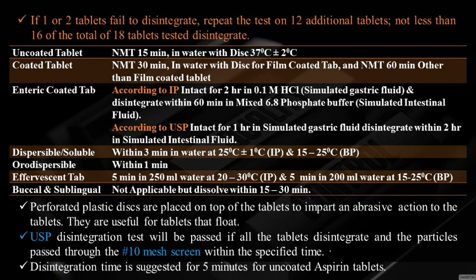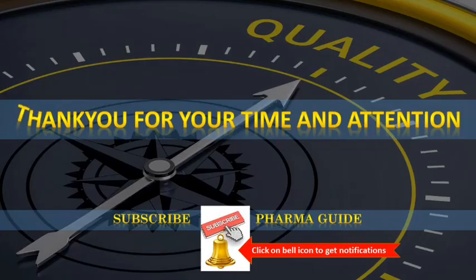Some important points: perforated plastic discs are placed on top of the tablets to impart an abrasive action and are useful for tablets that float. The USP disintegration test passes if all tablets disintegrate and particles pass through a 10-mesh screen within the specified time. Disintegration time suggested for uncoated aspirin tablets is 5 minutes, whereas for general uncoated tablets, not more than 15 minutes.